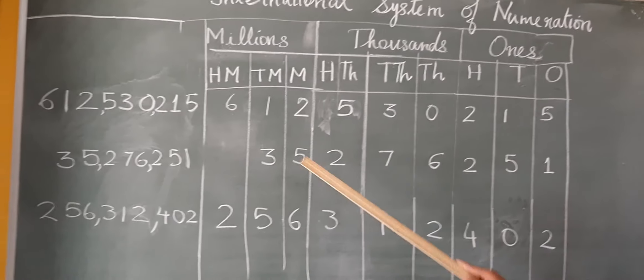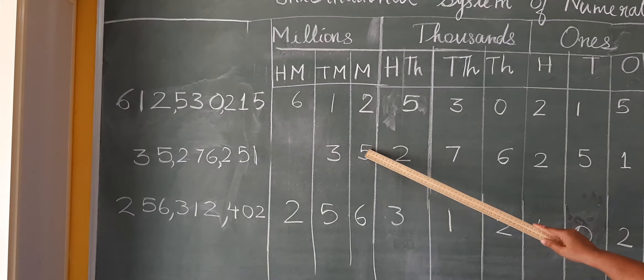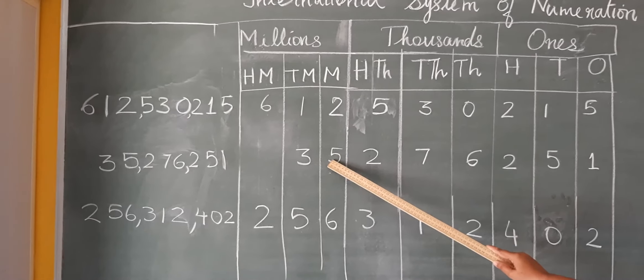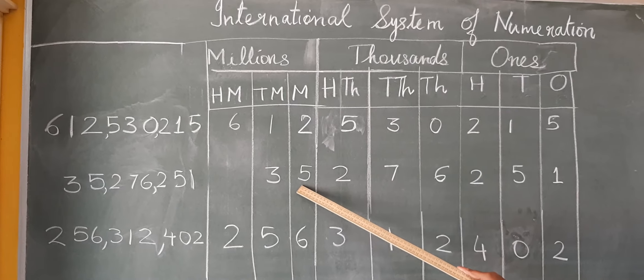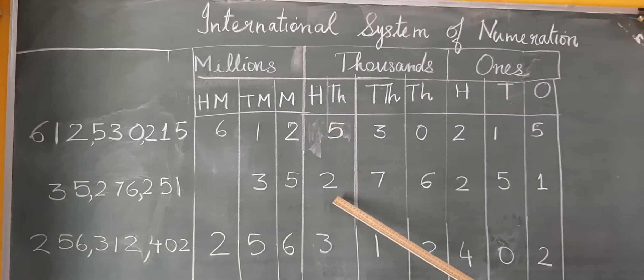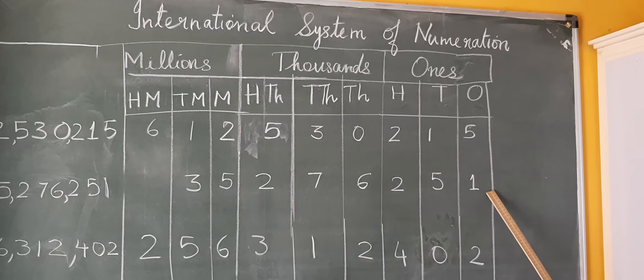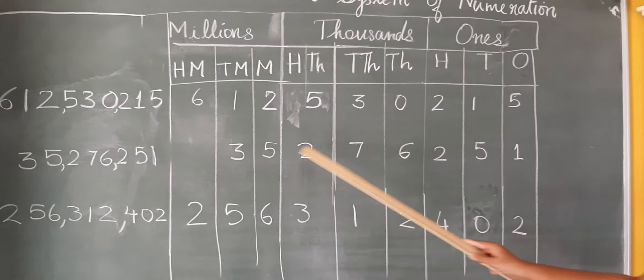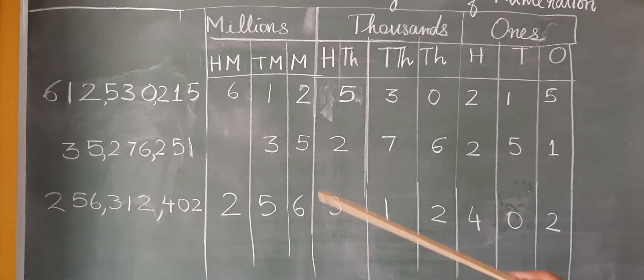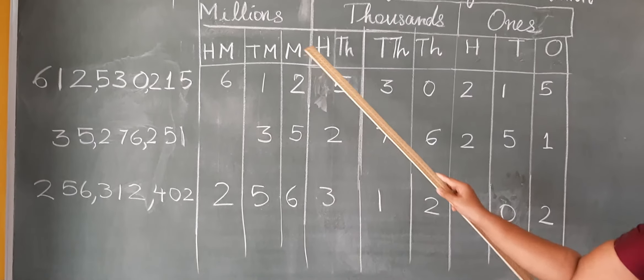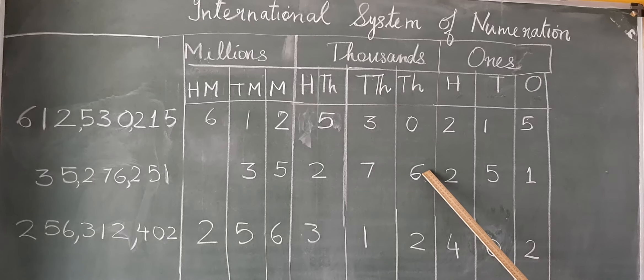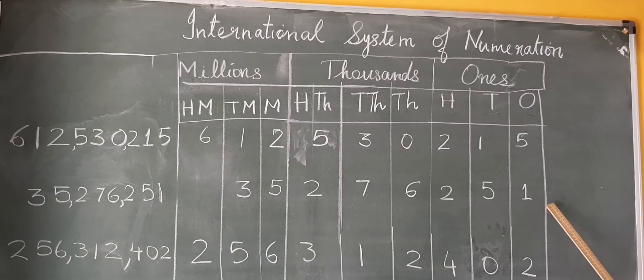Now how will I read this? In the millions period, I have only 35. So I will read 35 million, 276 thousand, 251. That is how I read this number.